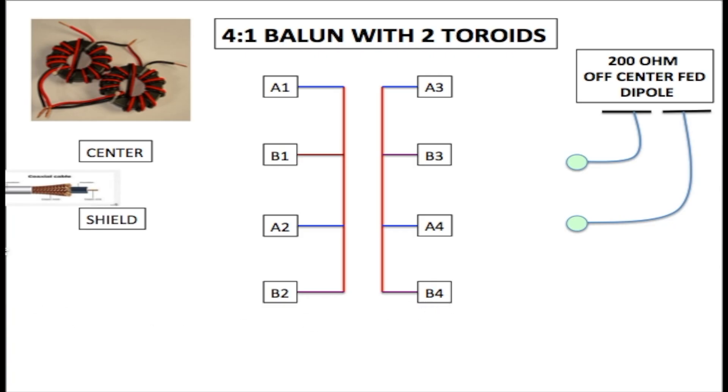So let's get started and we are going to connect everything now on the input. From the center conductor here which is this center conductor on the coaxial cable. We are going to A1 and A2. A1 on the first toroid and A2 on the second toroid. Now B1 is connected to the shield and B2 is connected to the shield. B1 on the first toroid, B2 on the second toroid.